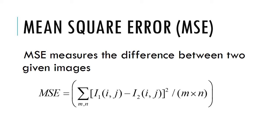MSE measures the difference between two given images. The expression used to measure MSE is: summation of (I1(i,j) minus I2(i,j)) squared, divided by M times N, where I1 and I2 are the two given images and M and N are the dimensions of the image.